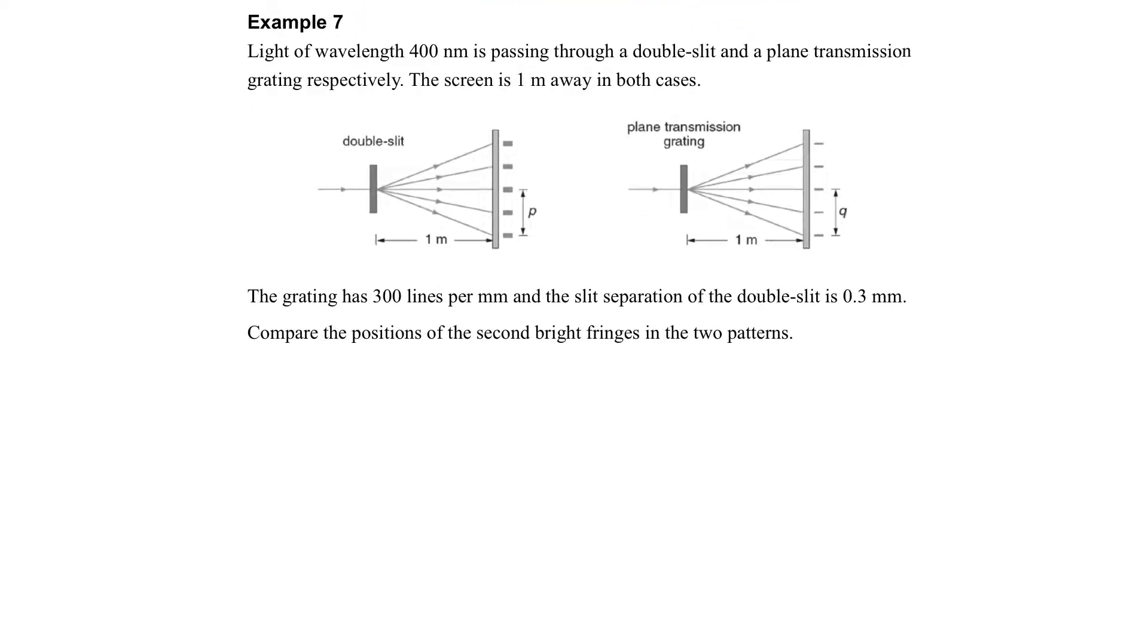So let's see an example to compare. If we direct the same light passing through the transmission grating and the double-slit - suppose we have 400 nm, one passing through the double-slit and the other one passing through the grating for the same distance between the slit and the screen. So we compare the standard double-slit and then the grating here.